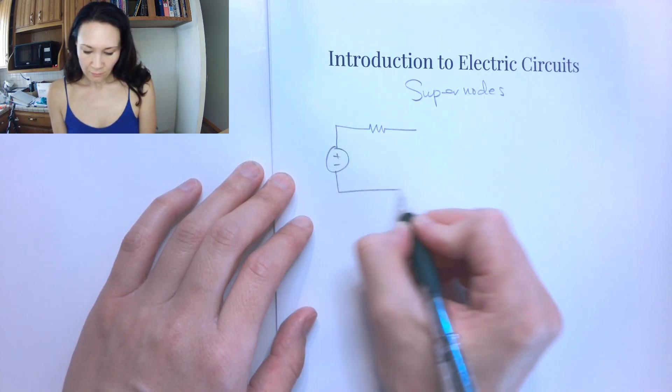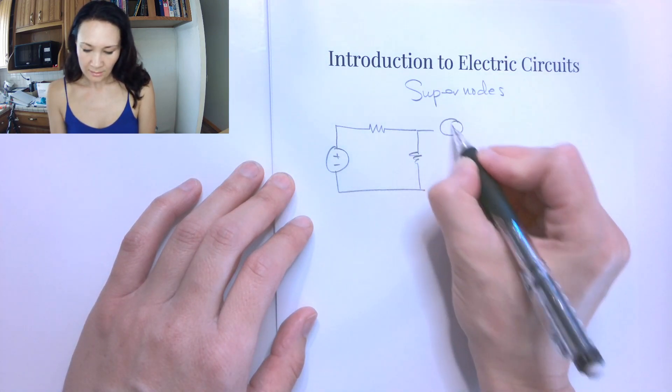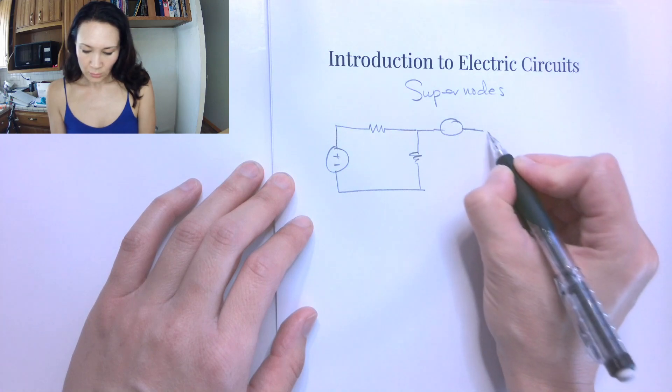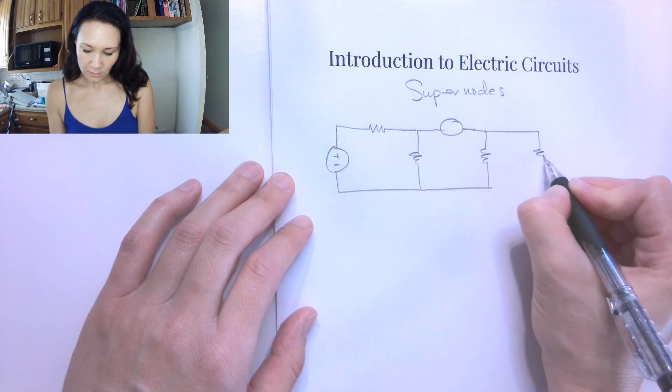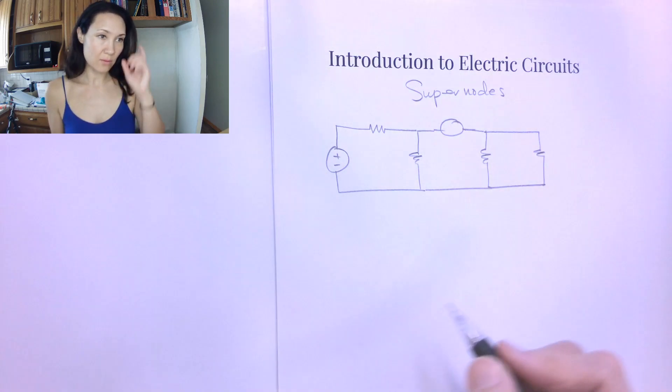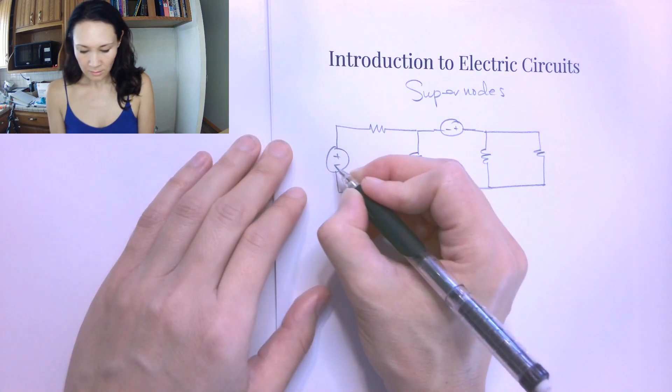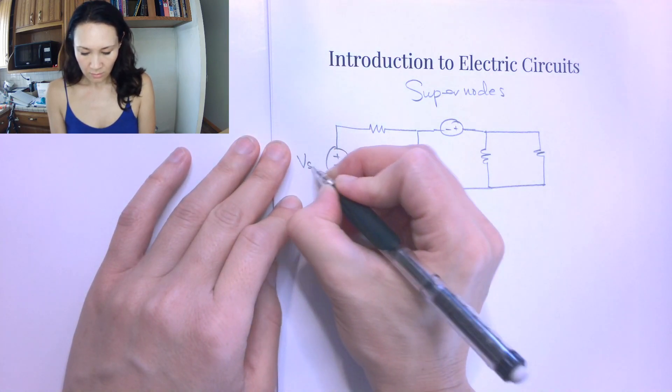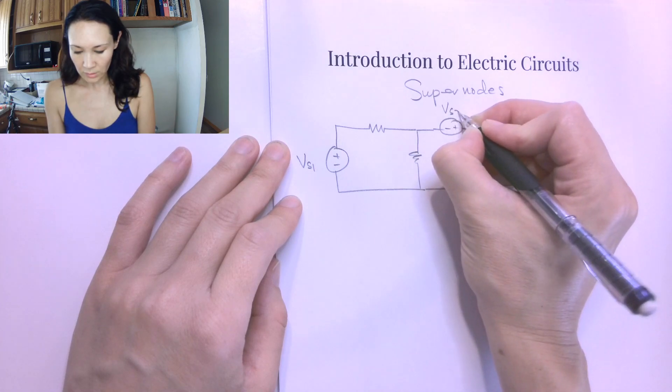Suppose we have a circuit with resistors and a voltage source in between these two nodes here. I'll put another resistor here. So suppose we have a circuit like this. I'm going to say this is plus minus, let's let this be our source voltage one, and let's let this be our source voltage two.